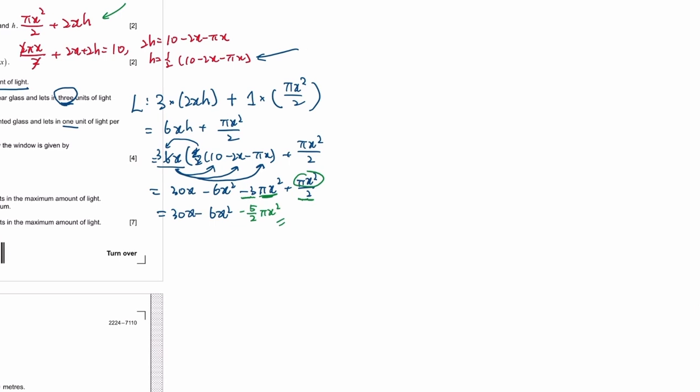Di is to differentiate it. So we'll do that dL/dx. So differentiate this. Differentiate 30x is 30. 6x² is 12x. And then 5 over 2 is a coefficient, it just stays in front. π is also just a number, so it's a coefficient, it stays in front. So you only differentiate x² which is 2x.